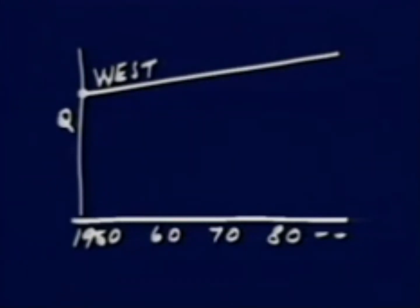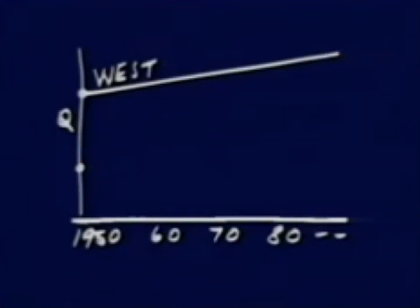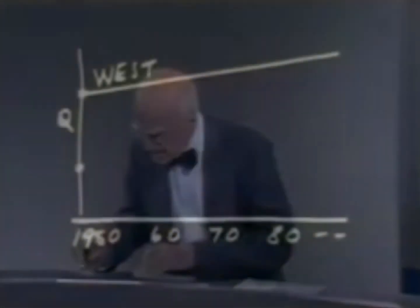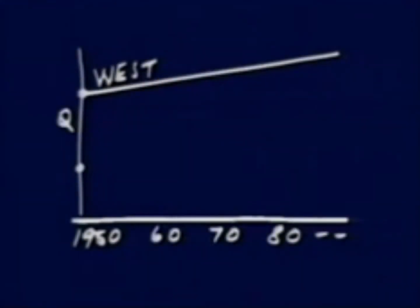In 1950, Japanese quality was poor. The Japanese then invested in a massive training program. They learned how to improve quality. Then they made quality improvements at a revolutionary pace, year after year. My estimate is that by the mid-1970s, they had equaled Western quality.